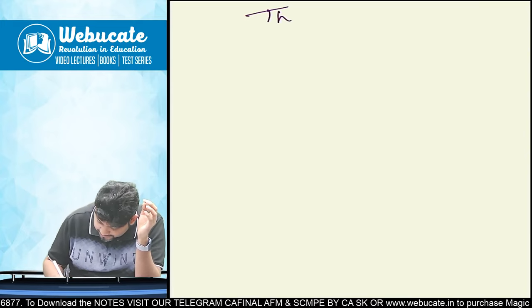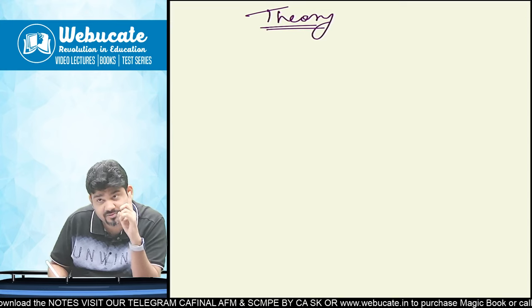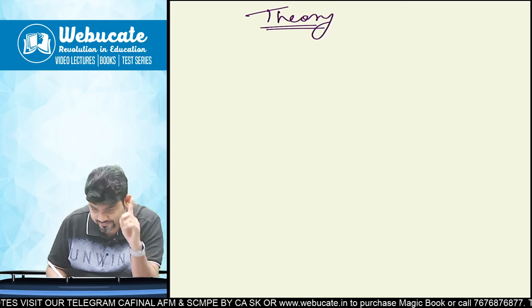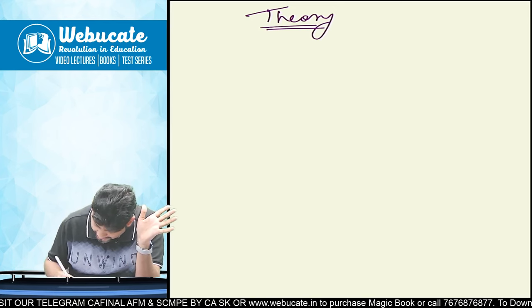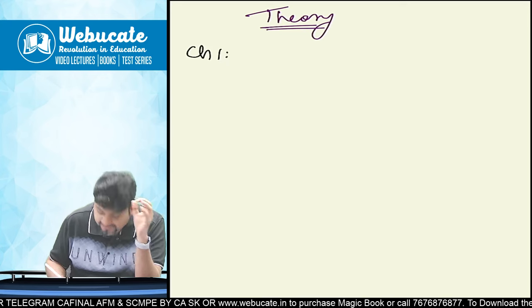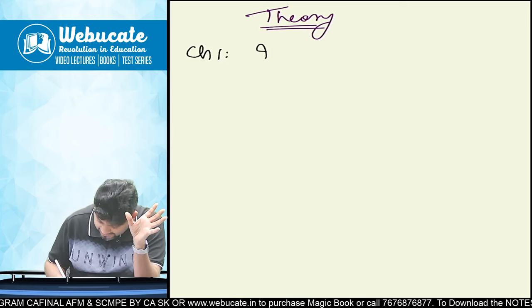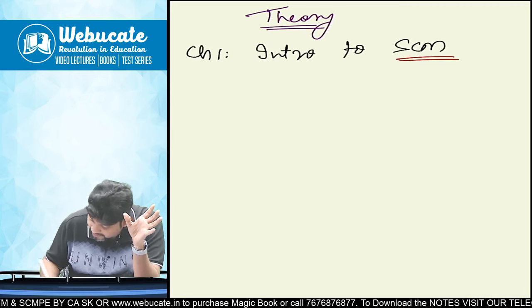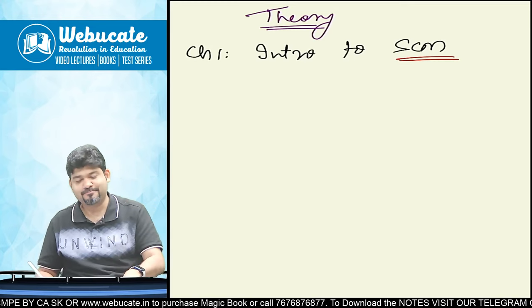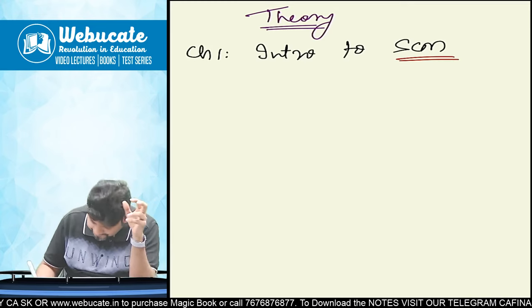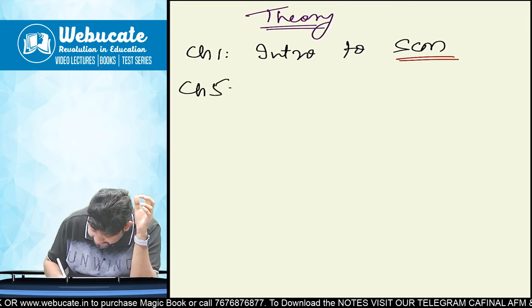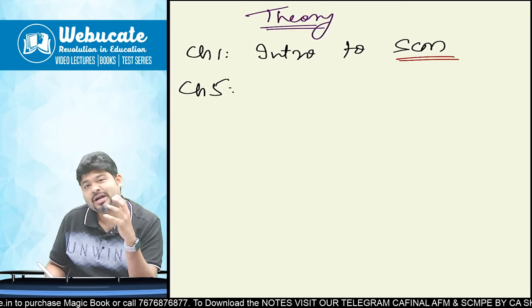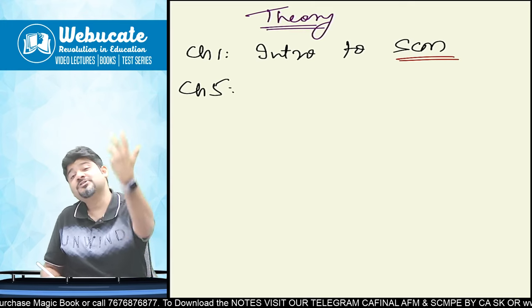Now, what are the chapters which is based only on theory? Please write it down along with me. I know there's an index available with you. Don't get into that trap. Where you have to write things, you have to write. Chapter number one is exclusively theory. And the name of the chapter is introduction to strategic cost management. Obviously, the basic concept setter. Then we have chapter number five, which is exclusively theory. Chapter number five is management of cost strategically of emerging business models.